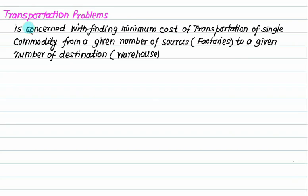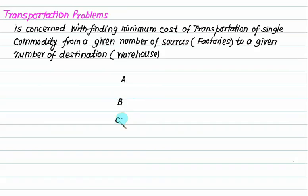By definition, the transportation problem is that in which we are basically finding the minimum cost of transportation of a single commodity from a given number of sources, that is factories, to a given number of destinations, that is warehouses. So we have a factory at A, a factory at B, and a factory at C. Let's say we have a production of 500 units, 200 units, and 300 units of a certain commodity.